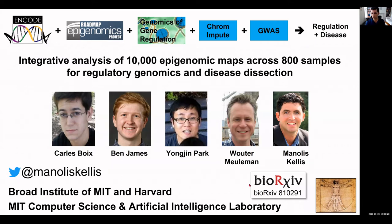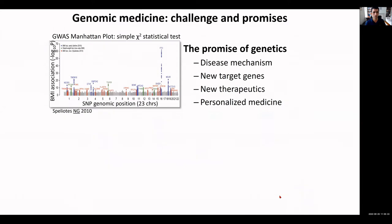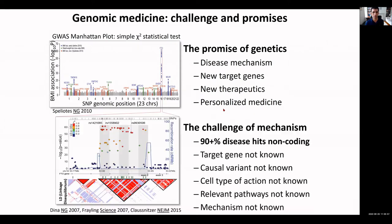The paper is on bioRxiv — you can just Google that and you will find it. Our goal is to enable personalized medicine, precision medicine, and to recognize the molecular basis of human disease. The way to do that is to start with human genetics and then understand the mechanism through which genetic variants act to develop new target genes, new therapeutics, and enable precision medicine.